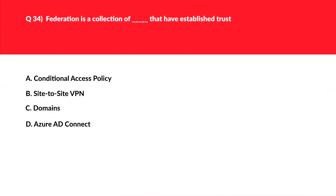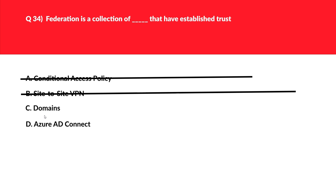This is a fill-in-the-blank question related to Federation. Option A, conditional access policies, is related to if-else logic and doesn't fit, so we'll reject it. Option B, site-to-site VPN, can be used to mount Azure file shares from an on-prem network without sending data over the open internet, but it doesn't fit with Federation, so we'll reject it. Option C, domains — a collection of domains looks good since Federation is all about trust, so we'll keep this aside. Option D, Azure AD Connect, is a synchronization tool connecting local on-prem Active Directory with Office 365 Azure Active Directory — doesn't look good here, so we'll reject it.